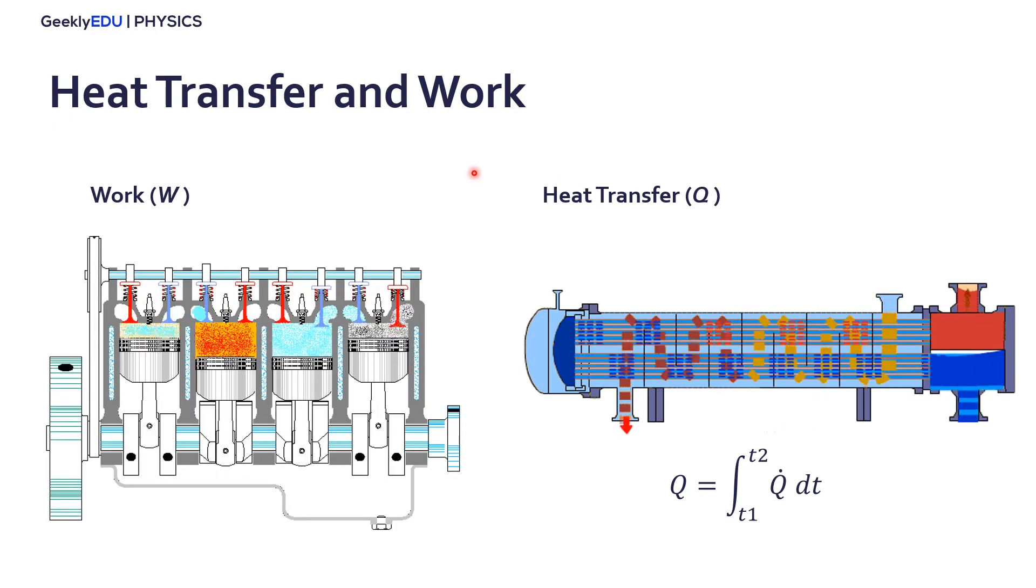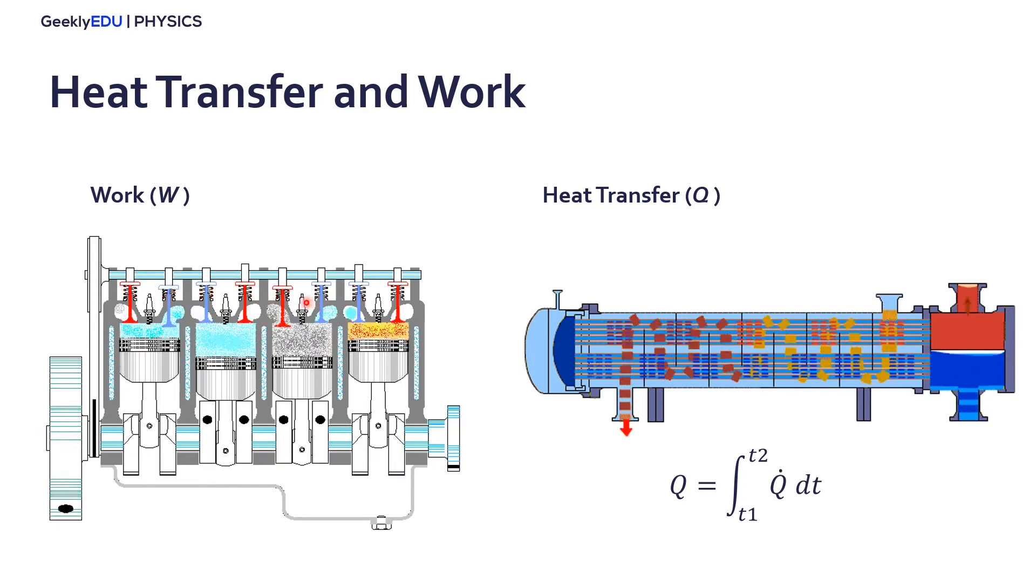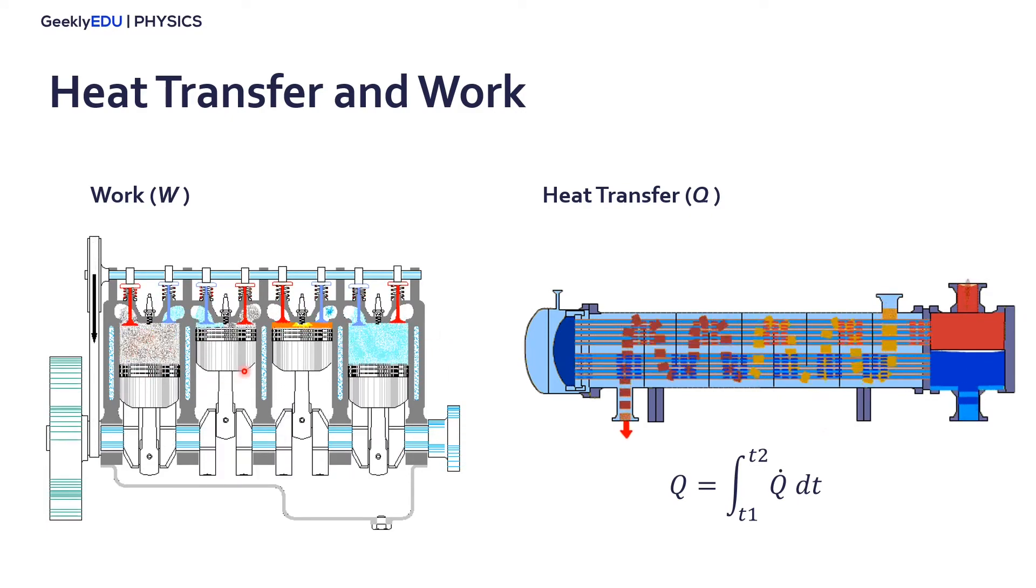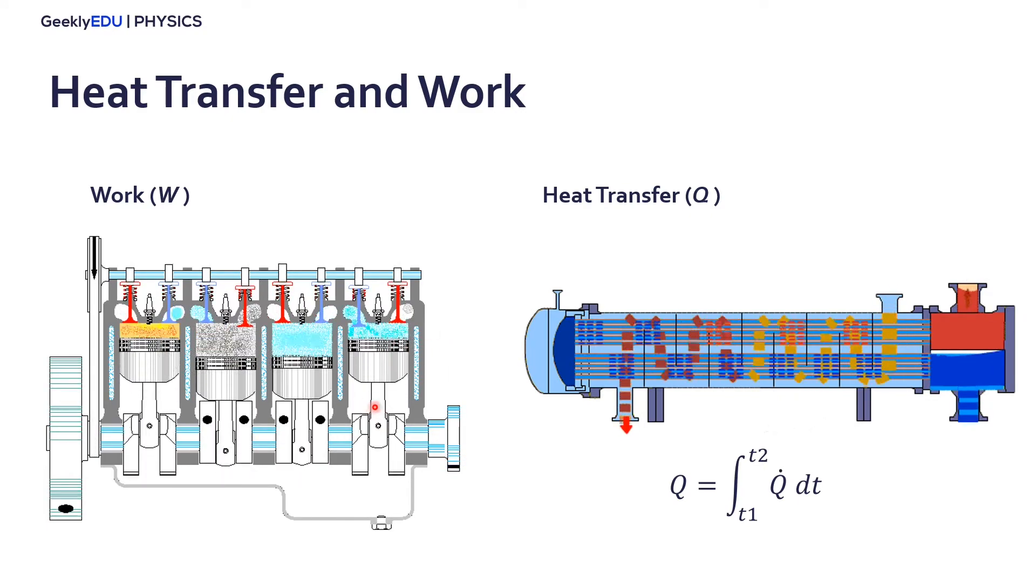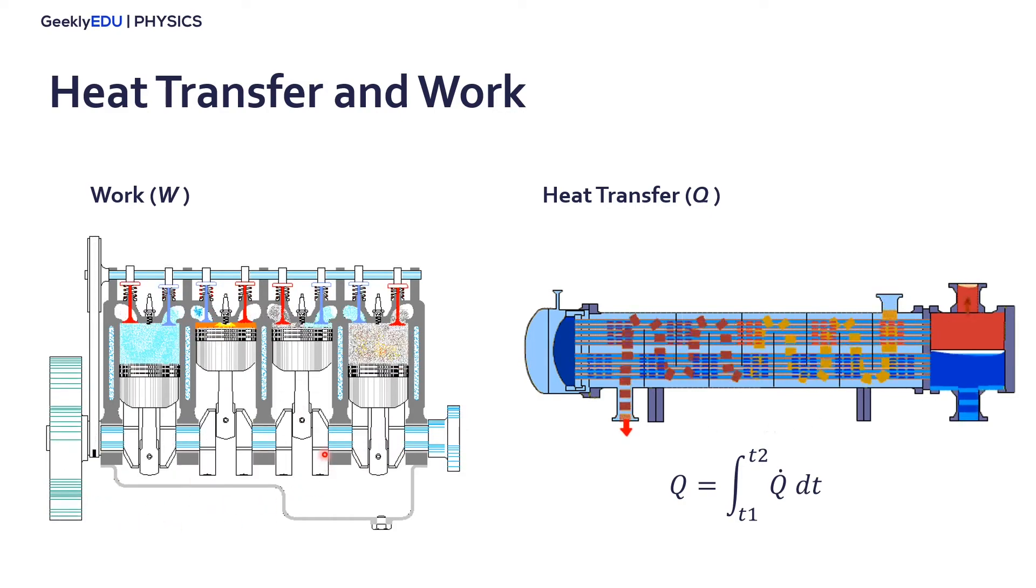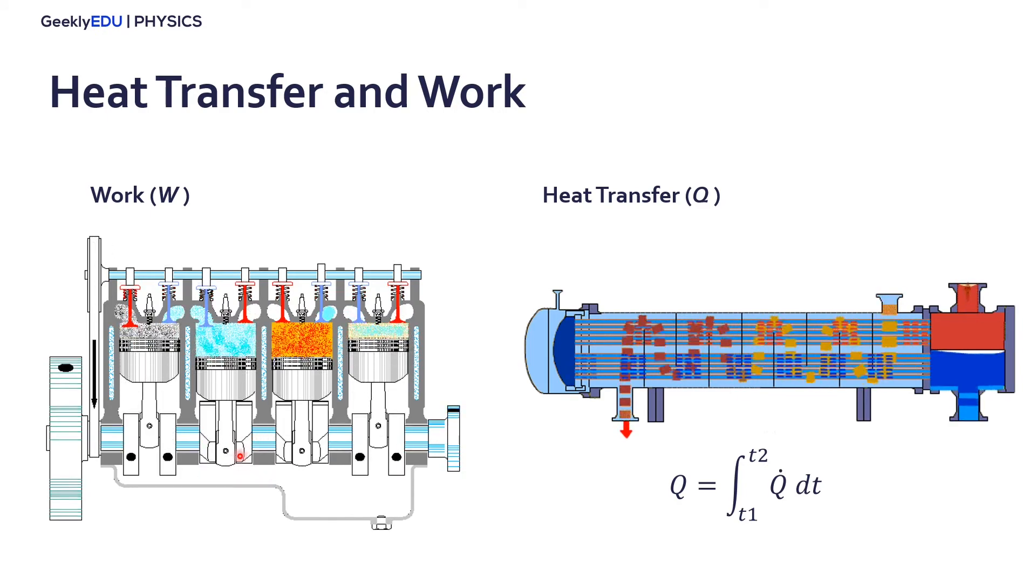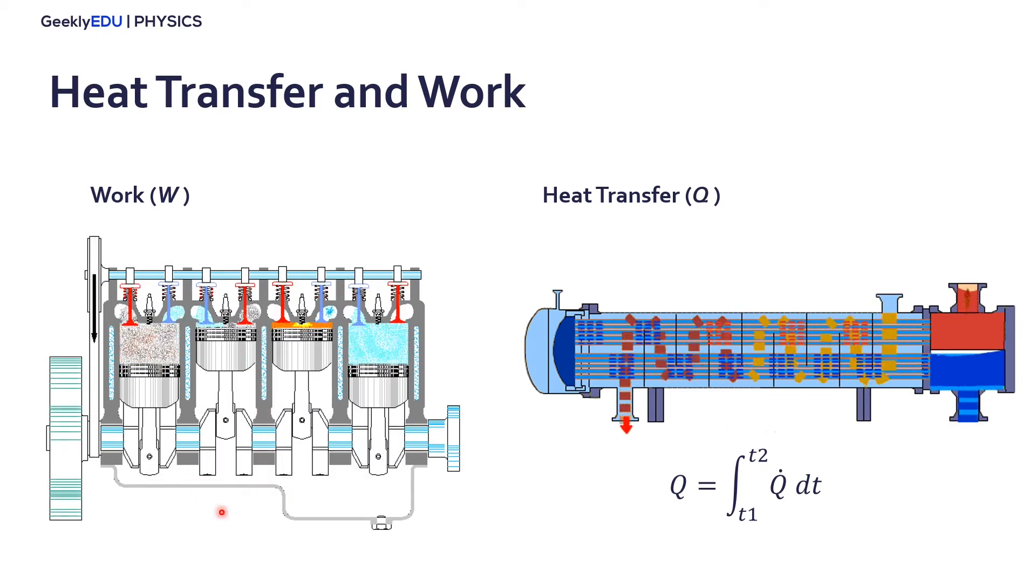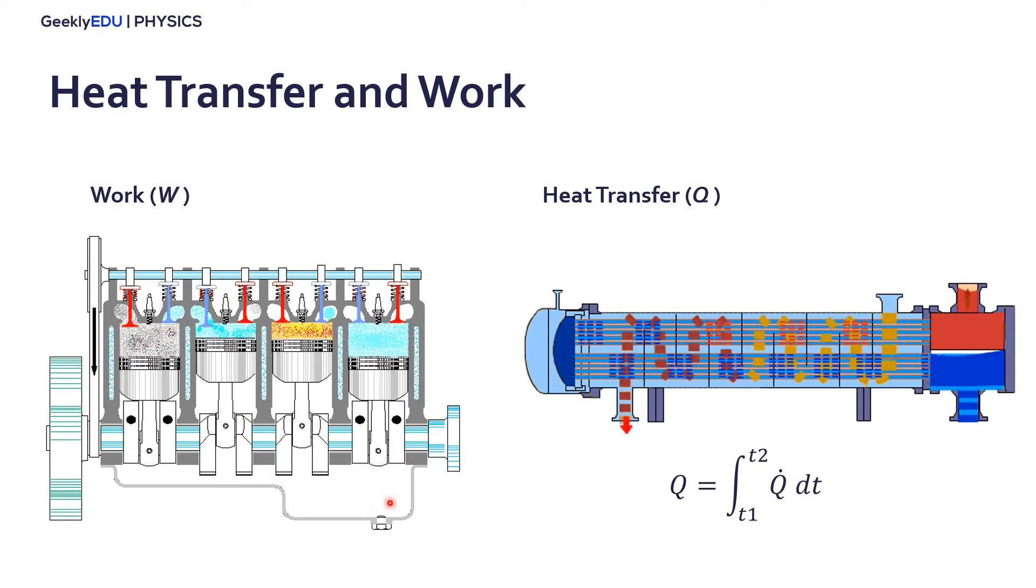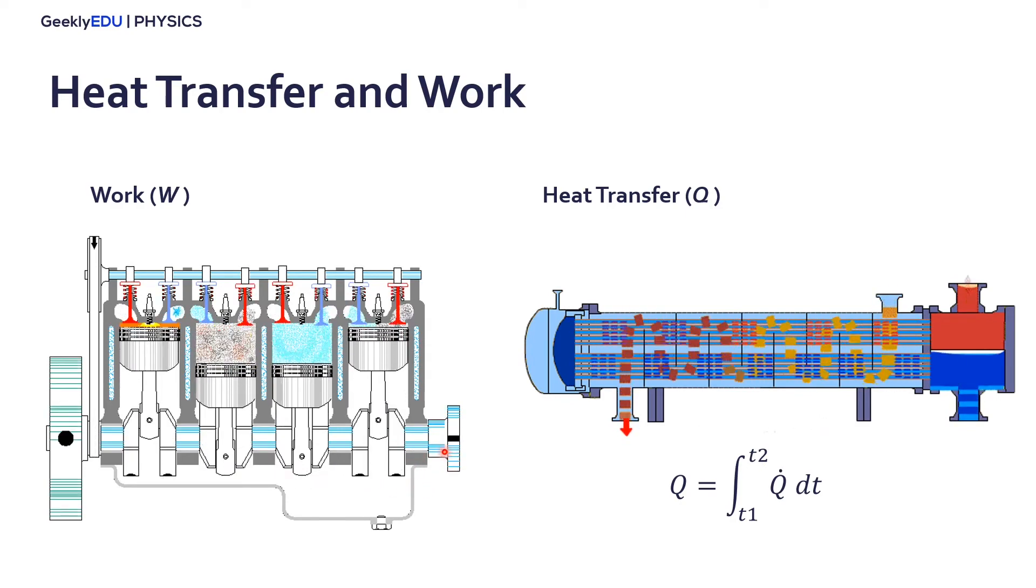So work is done by a system on its surroundings if and only if the sole effect on everything external to the system could have been the raising of weight. We express work as the integral of F ds, and it's the force that is applied throughout all the variations in space of the system, but it can also be expressed in terms of pressure and volume.